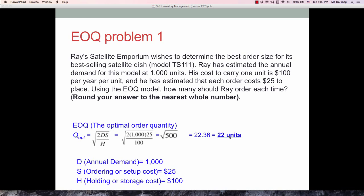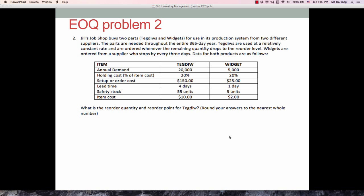Look at the second problem. This is the Glow Shop and Drop Shop problem. There are two different items in this company. Annual demand and holding cost - holding cost is not exactly shown, but it is a percentage of item cost. So item cost is given, so we can multiply this 20% which is 0.2 times 10, that is your holding cost. And setup order cost and lead time and safety stock is given.